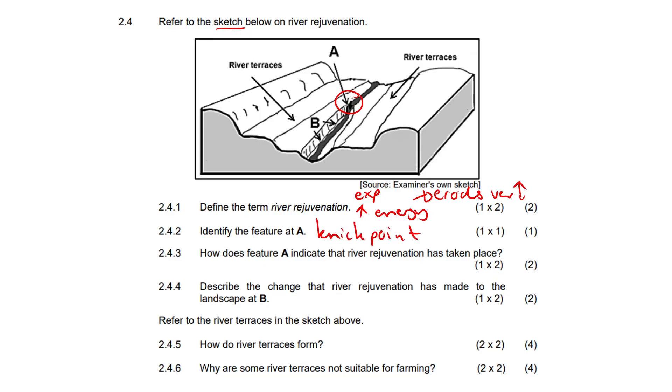2.4.3, how does feature A indicate that river rejuvenation has taken place? You're a little bit cooked if you don't know that was a nick point. So you might struggle a little bit in 2.4.3. In other words, there's a change. Look, that triangle means delta. So there's a change in the gradient.